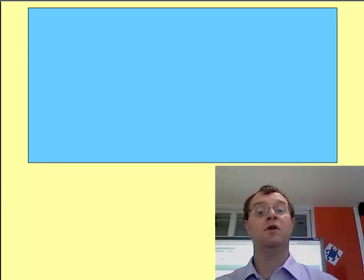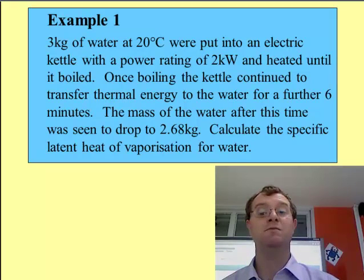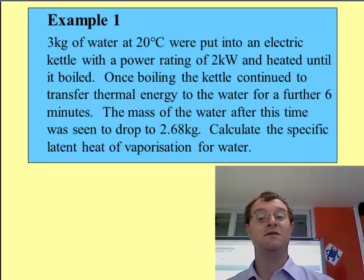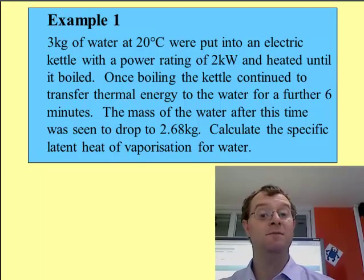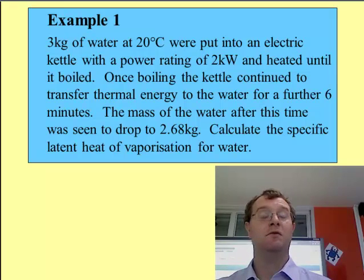Let's consider this in a question. Three kilograms of water at 20 degrees was put into an electric kettle with a power rating of 2000 watts and heated until it boiled. Once boiling, there's a further six minutes of time where vaporization takes place and the mass changes. This example is really useful because I only need to worry about the boiling phase. Think about the solution now.